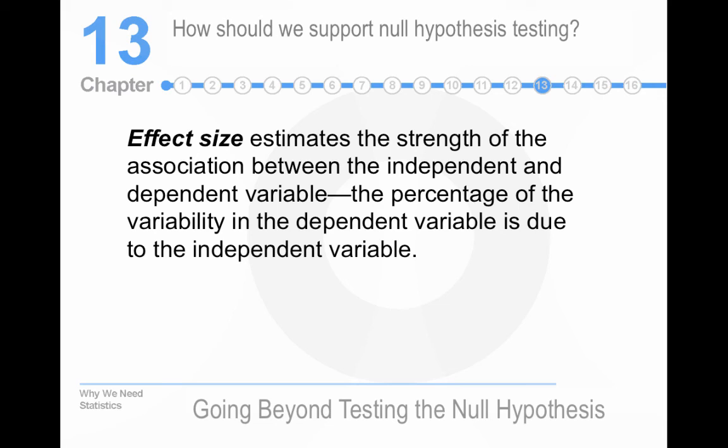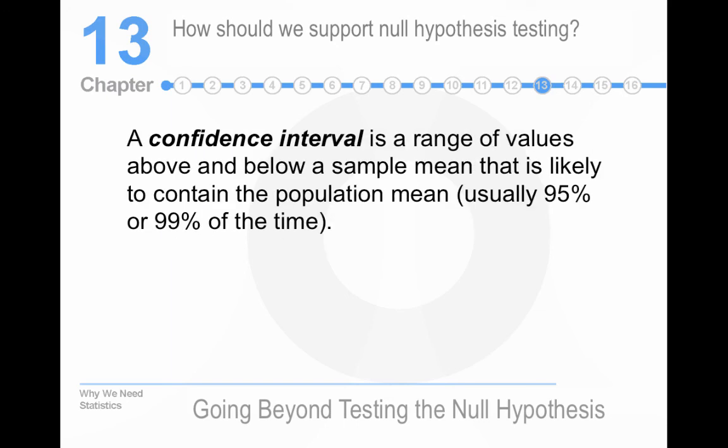A confidence interval is a range of values above and below a sample mean that's going to contain the population mean. And that's correct. So, the mean of the population, or the true mean, if you want to think of it that way, would fall somewhere within that confidence interval.